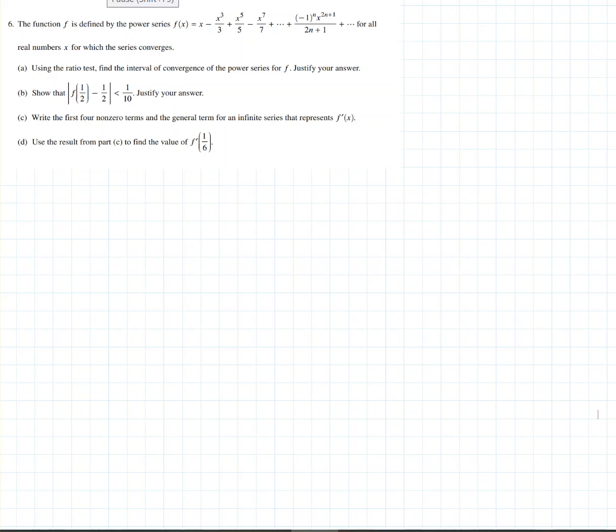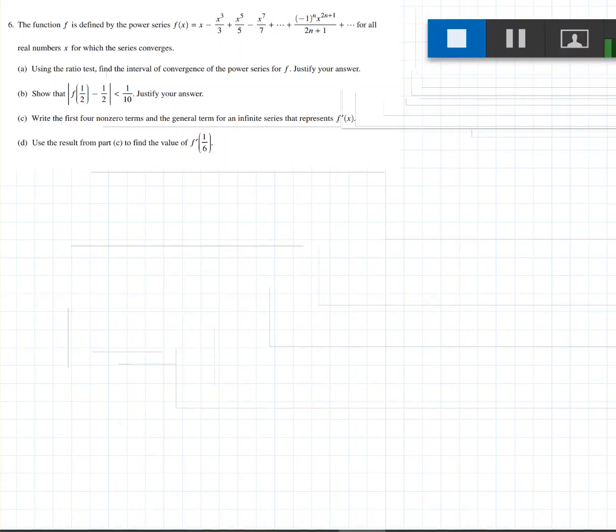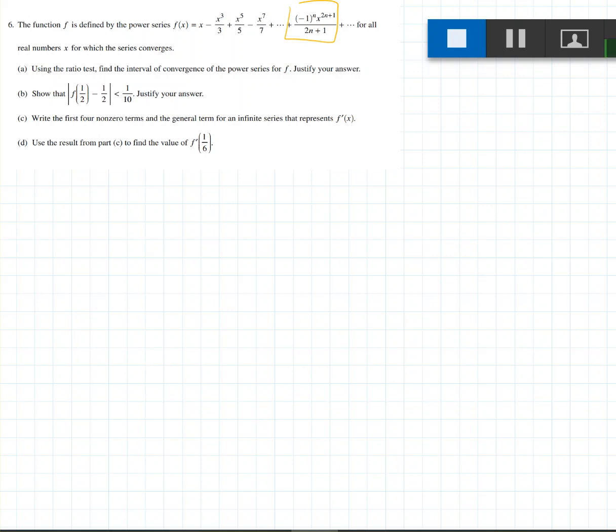We have that the function f(x) is defined by the power series f(x), that's the power series, and then there's the general term next, for all the real numbers x for which the series converges. For part a we're asked to use the ratio test to find the interval of convergence of the power series for f.